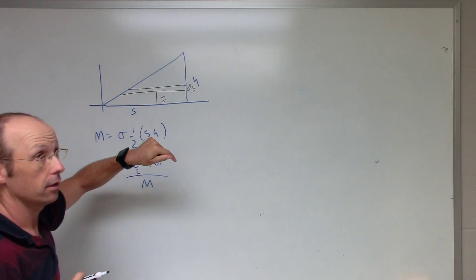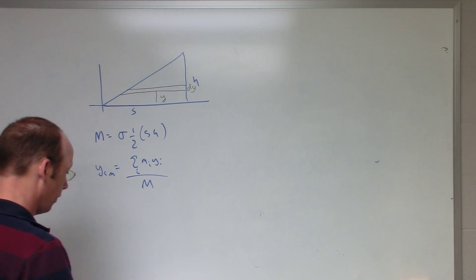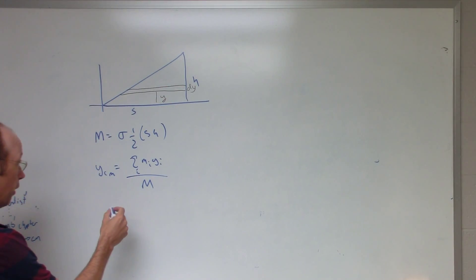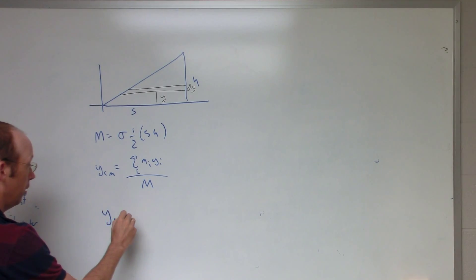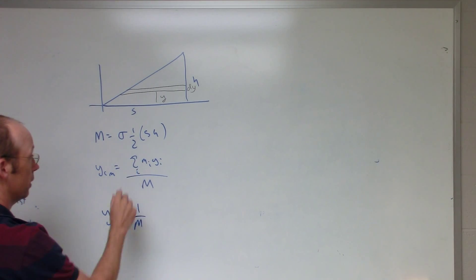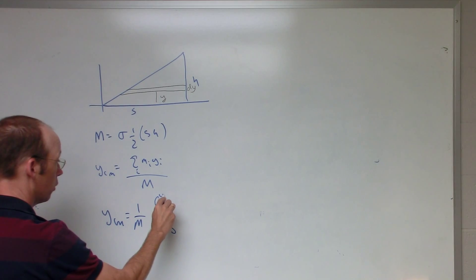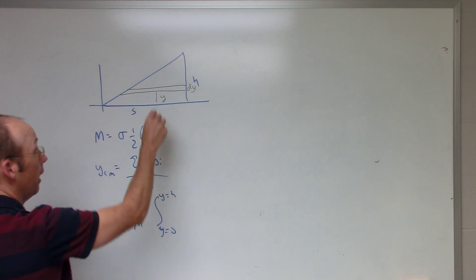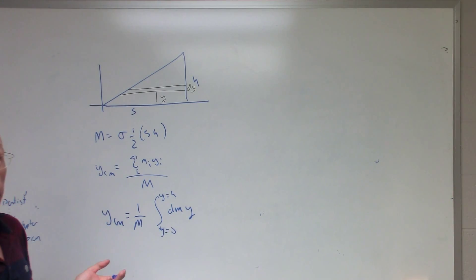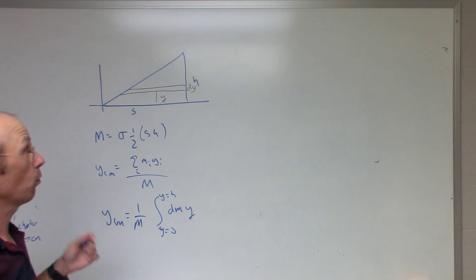The y value is easy, but the mass is not. I need the mass of each little piece. That turns this into an integral, because I'm letting the thickness dy go to zero. The y-center of mass is one over the total mass, integrated from y = 0 to y = h, of dm times y. But I can't integrate with dm as the variable — I need dm in terms of dy.